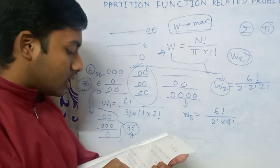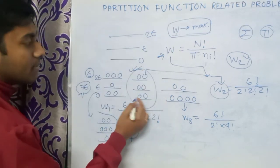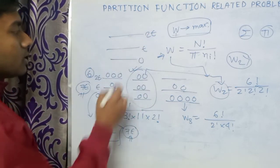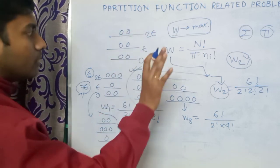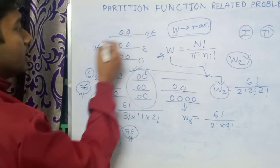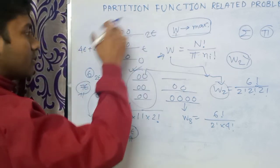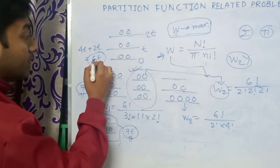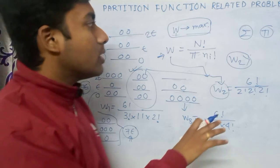The total energy of this most probable distribution is straightforward. With two particles at 2ε, two at ε, and two at 0, the total energy is 2×2ε + 2×ε + 2×0 = 4ε + 2ε = 6ε. So the total energy of the most probable distribution is 6ε. This is a very interesting and important problem.